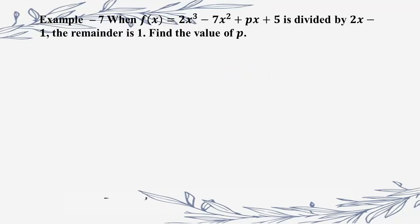Let f of x equal to 2x cubed minus 7x squared plus Px plus 5. The polynomial is then divided by 2x minus 1. The remainder is 1. Find the value of P. The remainder is equal to f of b by a, evaluated using 2x cubed minus 7x squared plus Px plus 5.